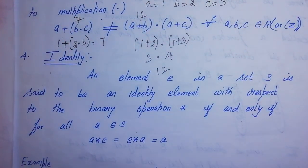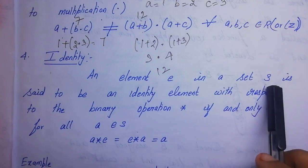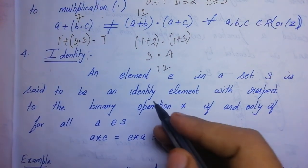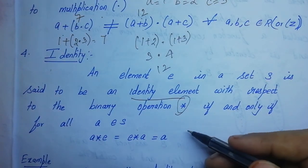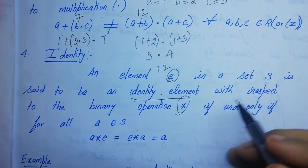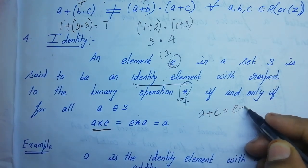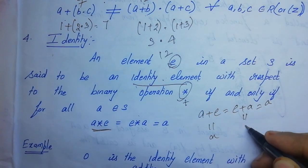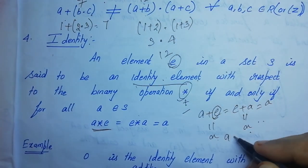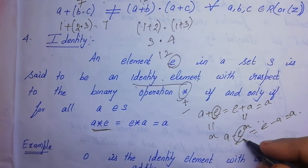Next is the identity element. An element e from a set S is called an identity element with respect to any operation — such as plus or minus — if the condition A star e = e star A = A is satisfied for all a in S.